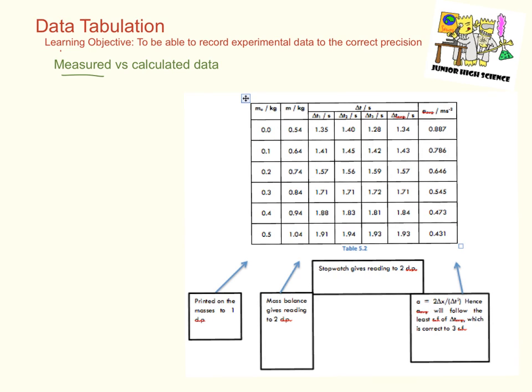Measured data will be data that we obtain from our instruments. Examples of instruments that we commonly use would be a stopwatch and perhaps a meter rule. Measured data must be recorded to reflect the precision of the instrument that is being used to measure the data.